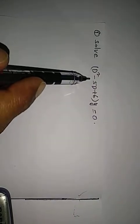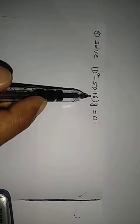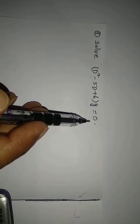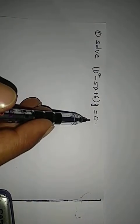Solve d square minus 5d plus 6 into y is equal to 0. This is a homogeneous differential equation.